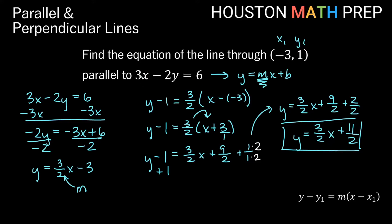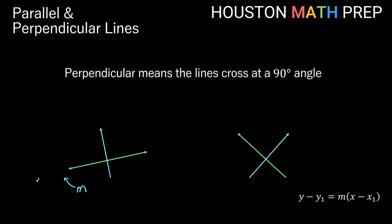So this line has the same slope as 3x minus 2y equals 6 — that has a slope of three halves — but we have a different y-intercept. That original line has a y-intercept of negative 3, while our new line has a y-intercept of eleven halves. Let's move on to the idea of perpendicular lines.